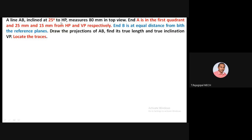The 25 degrees is the true inclination with respect to HP. The 80 mm is the top view length, not the true length. This is the true inclination of the line, not the inclination of the top view. End A is in the first quadrant — we are using first angle projection. End A is 25 mm from HP (25 mm above HP) and 15 mm from VP (15 mm in front of VP).